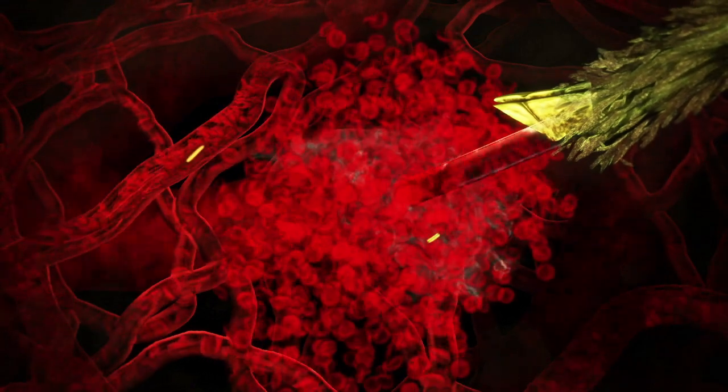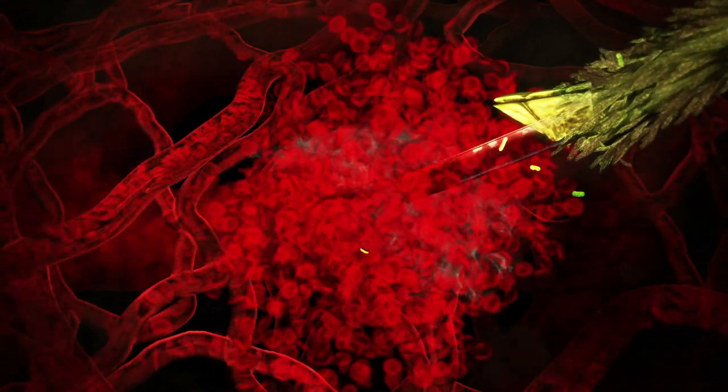The parasite rides the bloodstream like a network of roads, seeking its first target: the core of your body's blood filter system, the liver.